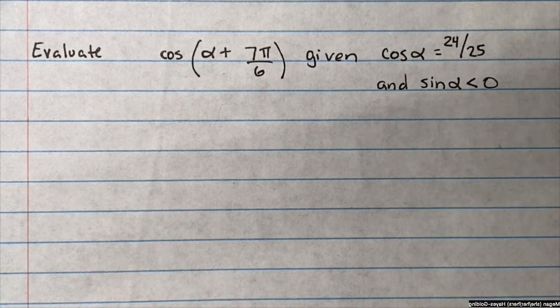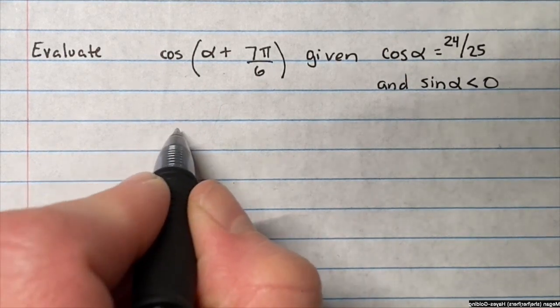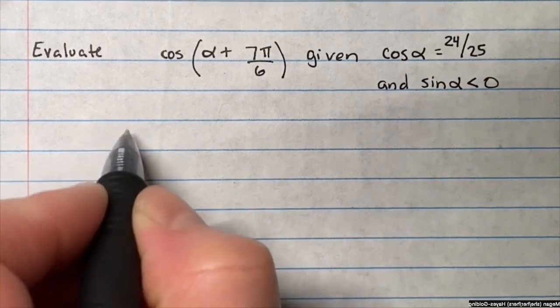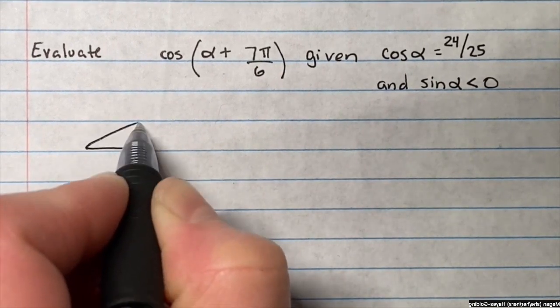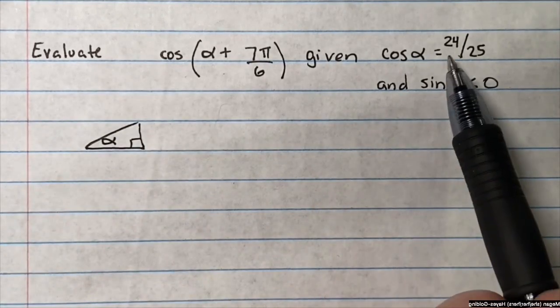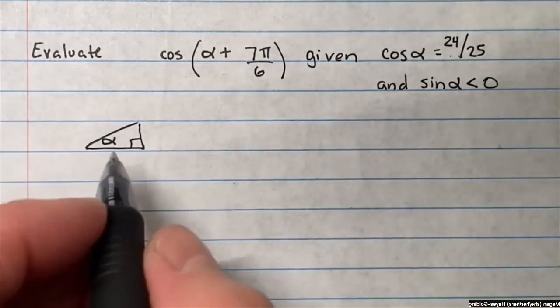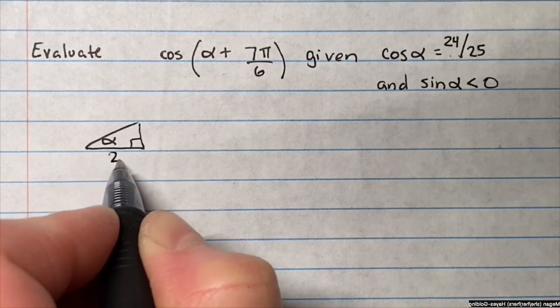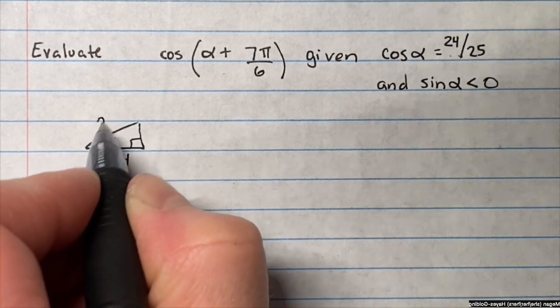My first advice is to figure out what this triangle looks like. So I'm just going to draw a generic triangle. I don't even know if this is accurate to the situation. Put alpha here, and since I know the cosine of alpha is 24 over 25, that means the adjacent side is 24 and the hypotenuse is 25.